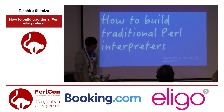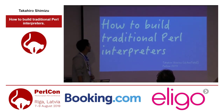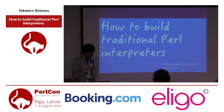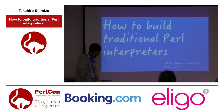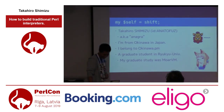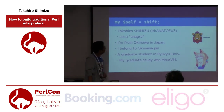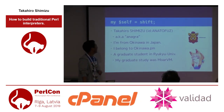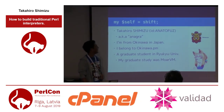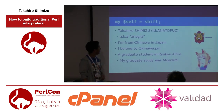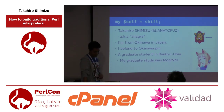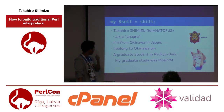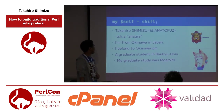This talk is 'How to Build Traditional Perl Interpreters' from Takahiro Shimizu. I am very nervous. My cheapID is Anagura, but Japanese often call me Anagura. This is my Twitter account name. I also belong to Okinawa.rb.